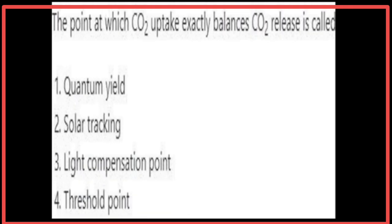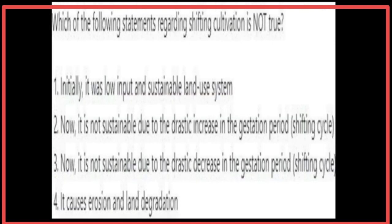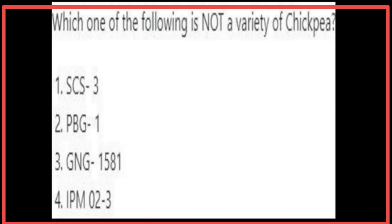The point at which carbon dioxide uptake exactly balances carbon dioxide release is called the light compensation point. Regarding shifting cultivation, it is not true that it is now unsustainable due to the drastic increase in the gestation period, i.e., the shifting cycle. IPM 0-3 is not a variety of chickpea.